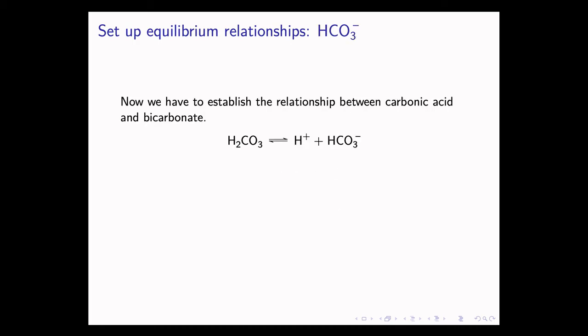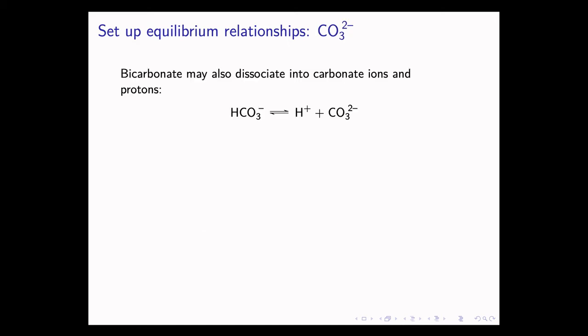So let's establish the relationship between carbonic acid and bicarbonate. As a reminder, this is governed by this chemical reaction. Now at equilibrium, Ka1 equals H+ times HCO3- over H2CO3, where all of the things in brackets are concentrations in moles per liter. And Ka1 is a constant, 10 to the minus 6.35.